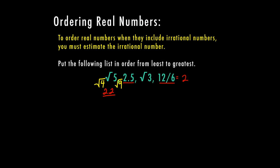Then we have the square root of three, which is going to be between the square root of one and the square root of four. So that's between one and two. And since three is closer to four, we're going to estimate a little bit higher. So I'm going to estimate 1.7. So now we have our four numbers that we're going to be comparing.